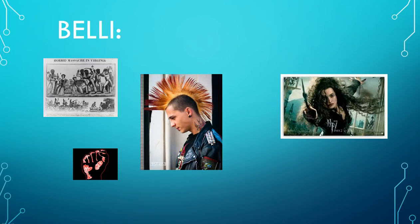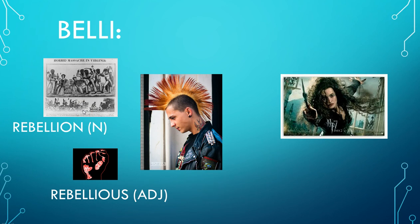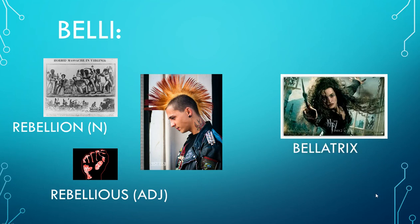The next root is belly — not belly laugh. First we have rebellion and rebellious: rebellion is the noun form and rebellious is the adjective form. This picture is from the Nat Turner Rebellion, which happened here in Virginia — one of the most famous slave uprisings ever, and it really pushed the abolition movement forward. The character Bellatrix is also a word that means female warrior. So belly means war.